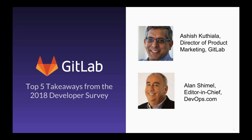Before we get started, let me quickly go over a couple of ground rules on how we're going to run today's webinar. We really would like to see questions from our audience. In the Go To Webinar control panel, you'll see a section for questions — it'll be in the top right-hand corner of your screen. Click the arrow and you can type your question right in there.